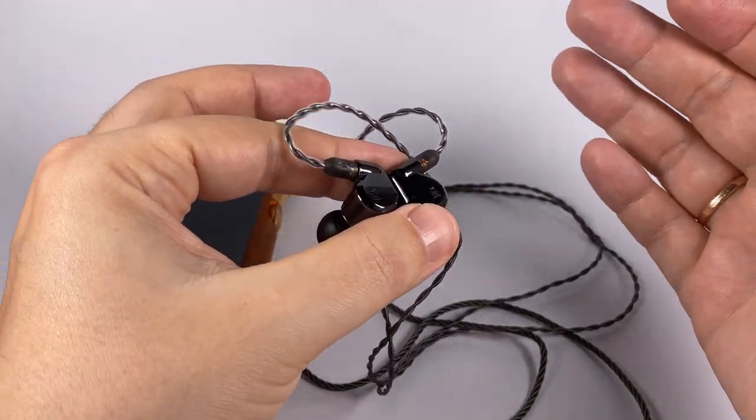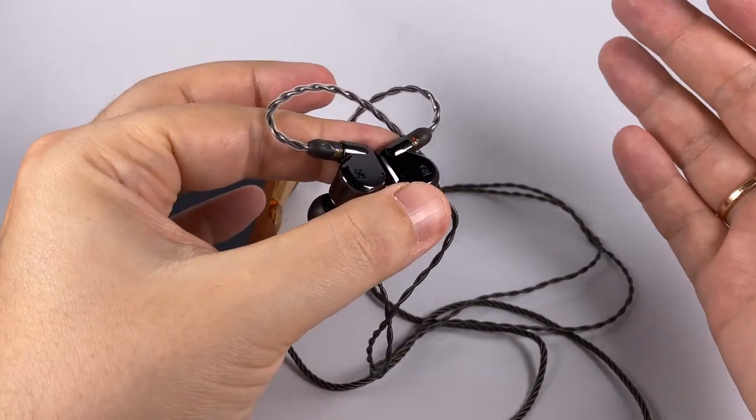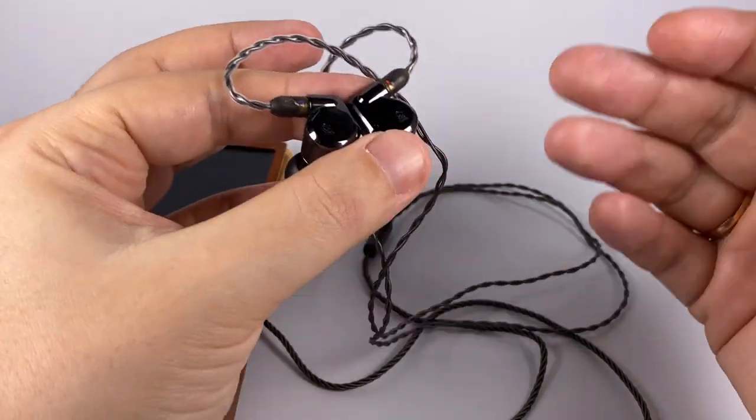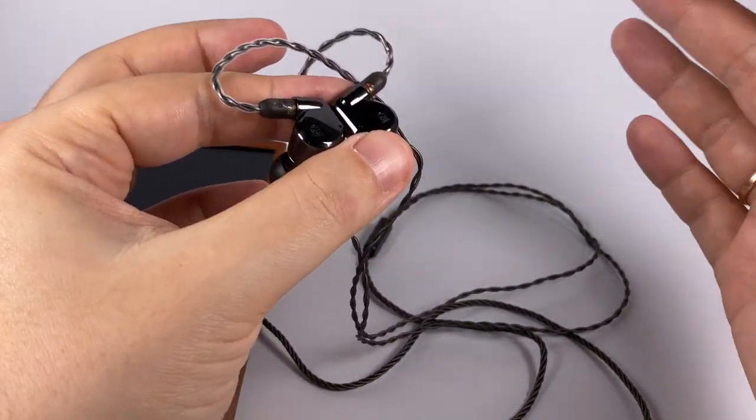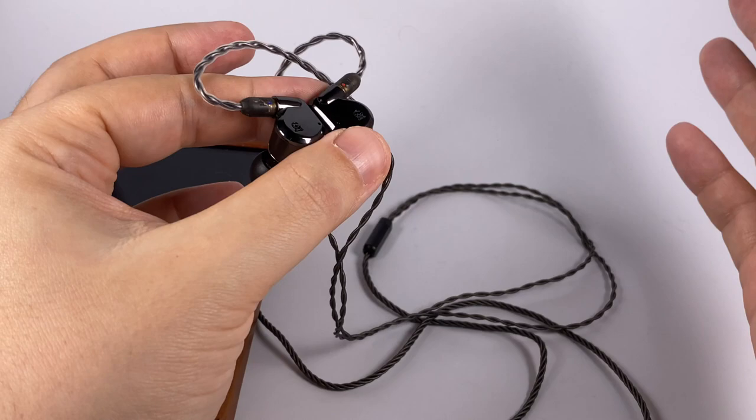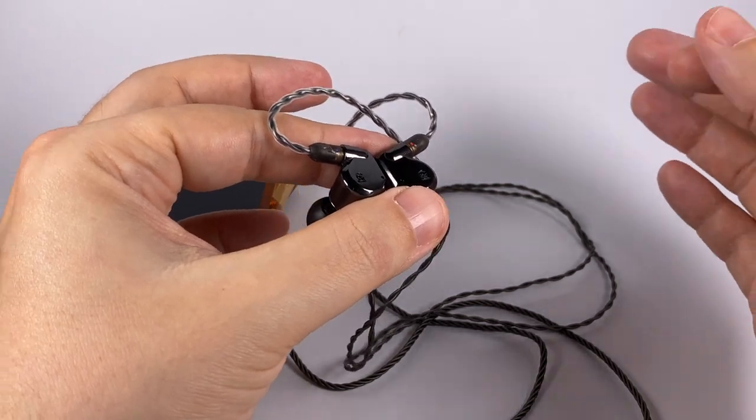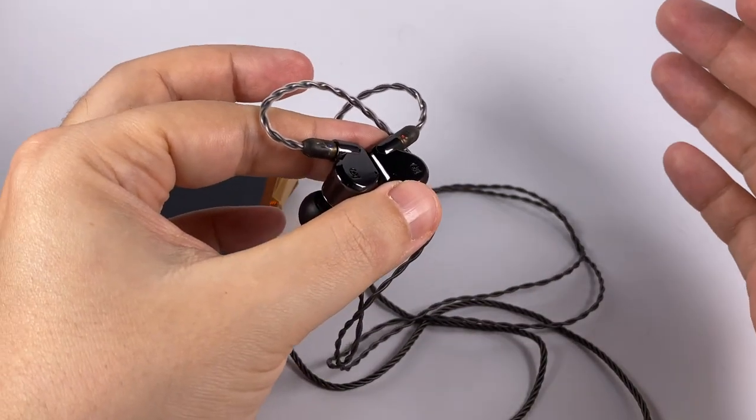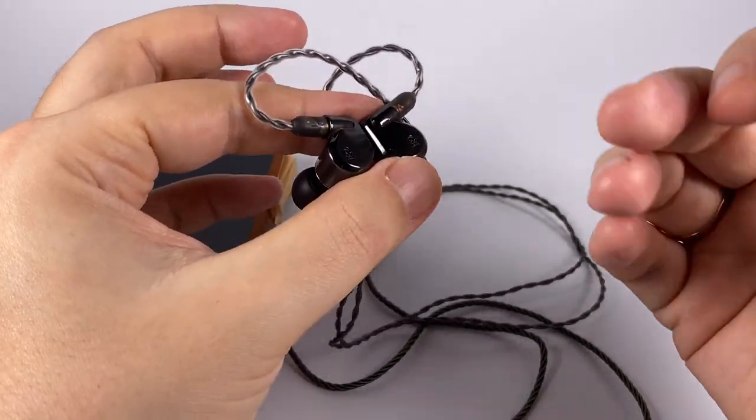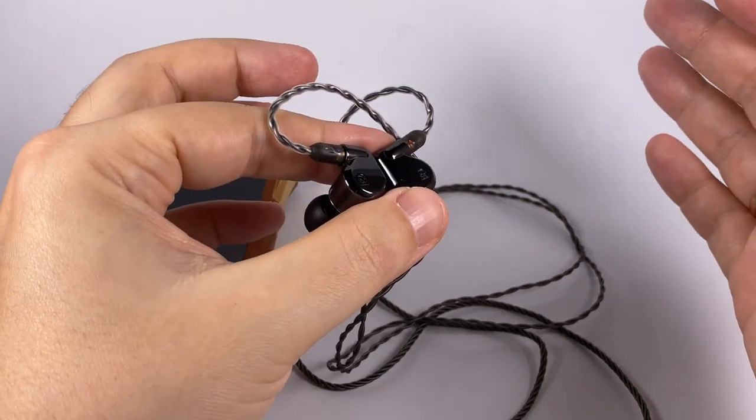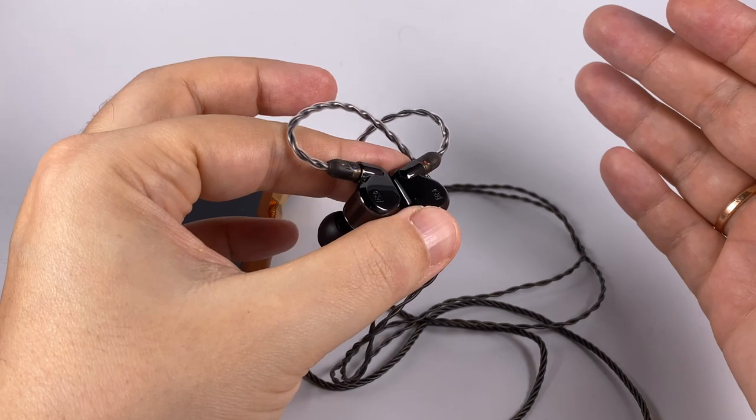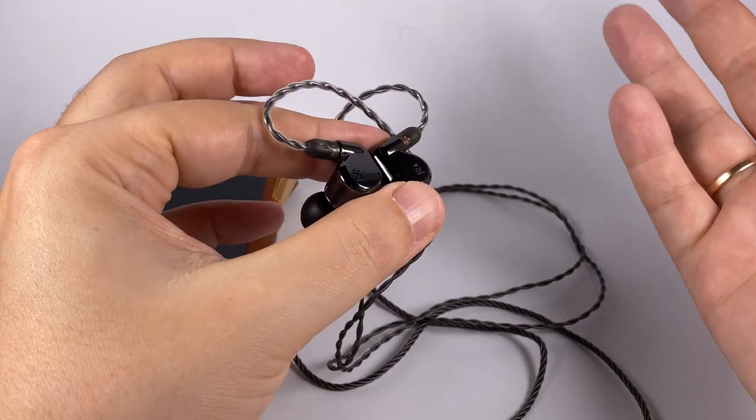And that means that it's not classical basshead. And treble here is accented, it's forward and it has a bit of additional energy put into this region. They're not sounding sharp for me, but for sensitive people of course they could be somewhere on the edge or even crossing that edge a little bit. But for me it's just a good single balanced armature treble - fast, clean, resolving, a bit lightweight, a bit lacking layering, but still good with saturating the track with overtones.